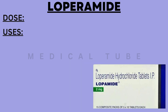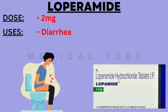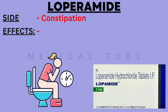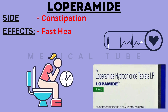The next drug is Loperamide. The dose is 2 mg. It is used in diarrhea. The side effects of Loperamide are constipation and fast heartbeat.